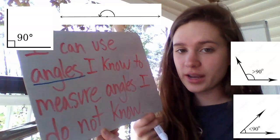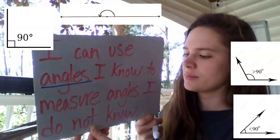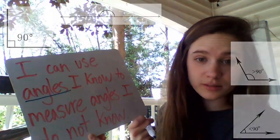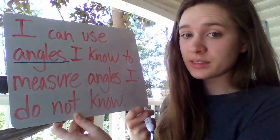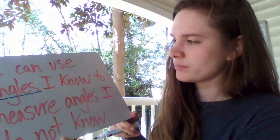There's acute, obtuse, straight angles, and right angles. Remember 90 degrees are in a right angle. Alright, let's get to it.